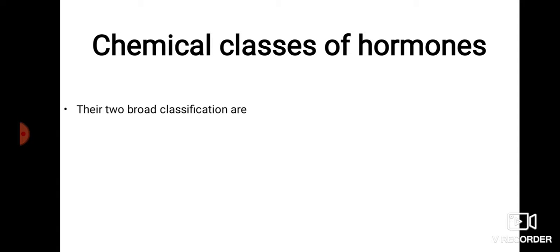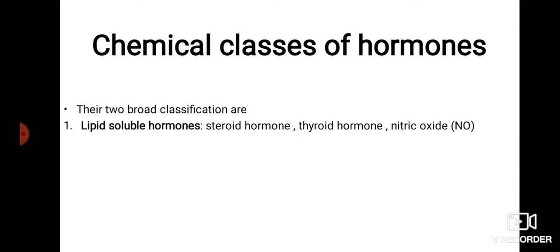On the basis of chemical classes, hormones are divided into two classes. First is the lipid-soluble hormone, which contains steroid hormones, thyroid hormones, and nitric oxide. Steroid hormones are derivatives of cholesterol, and thyroid hormones are synthesized by attaching iodine to the amino acid tyrosine.